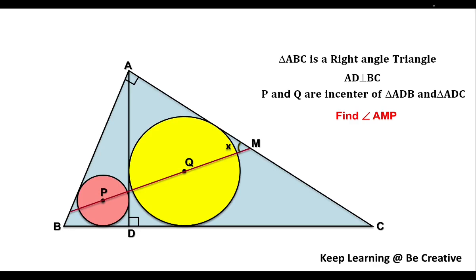Hello everyone, welcome to Keep Learning. Triangle ABC is a right angle triangle. AD is perpendicular to BC. P and Q are incenters of triangle ADB and triangle ADC respectively. Find angle AMQ. Let's see the solution.